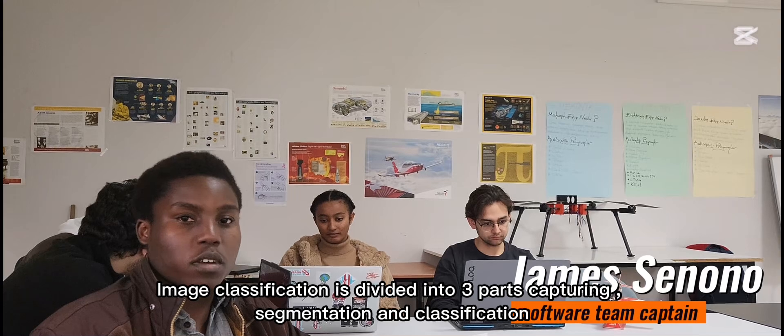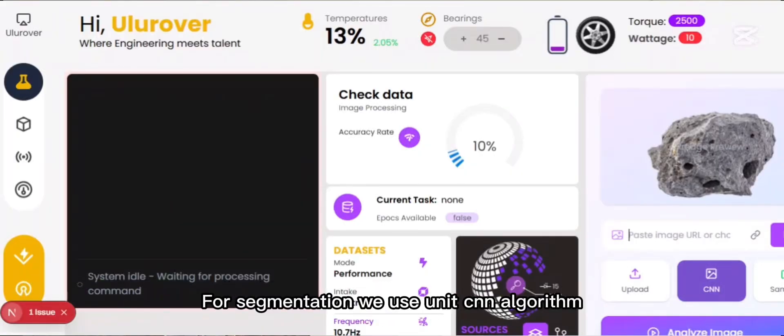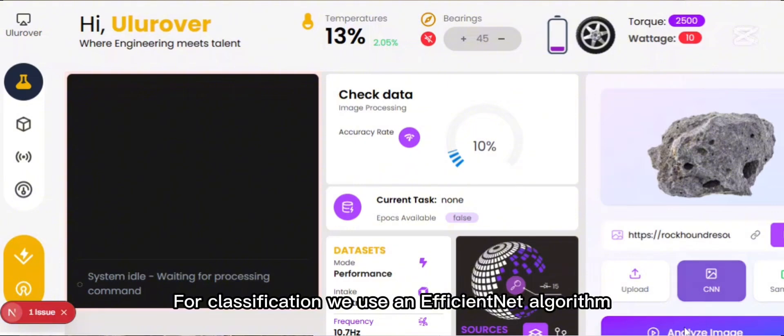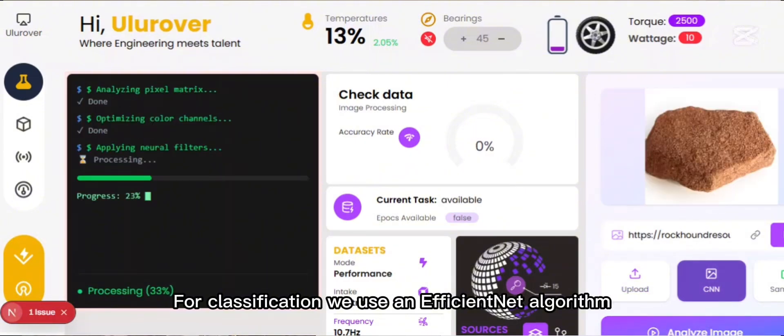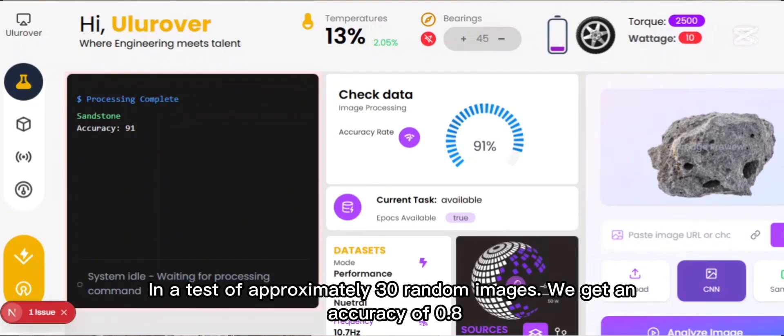Image classification is divided into 3 different stages: the capturing, segmentation and classification. For segmentation, we use the UNet CNN algorithm. For classification, we use an EfficientNet B2 algorithm. And for capturing, we use the onboard webcam mounted on the rover. In a test dataset, we get an accuracy of 0.8.